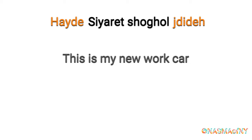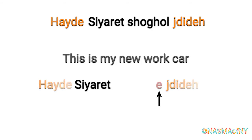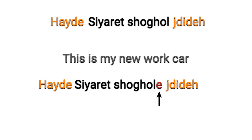Example: this is my new work car. The word 'my' is going to be carried by شغل. So the sentence translates to hayde siyarat شغلي jdeede. Notice how the possessive went to شغلي.